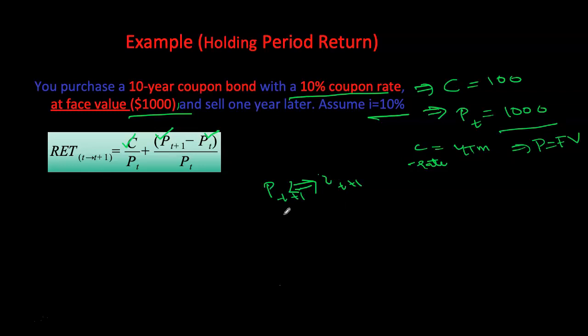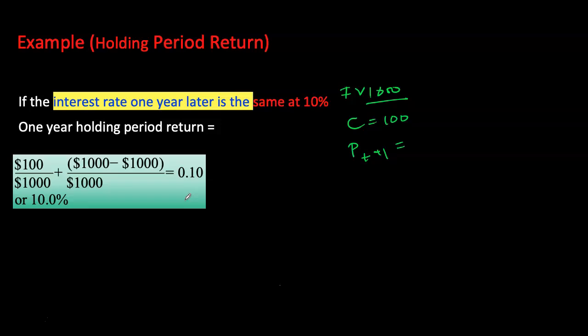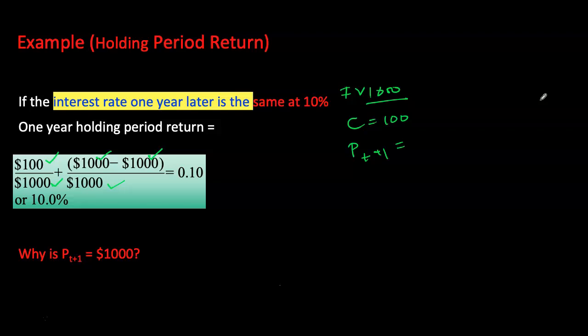If I know the interest rate one year from now, I can calculate the selling price. Let's assume that after one year interest rates remain constant at 10%, so the discount rate is not changing. The face value is still $1,000, coupon rate is still 10%, and the new price remains $1,000. The current yield is coupon payment divided by purchase price of $1,000, and the rate of capital gain is zero, giving a total return of 10%. Whenever the coupon rate equals the interest rate, price remains equal to face value.